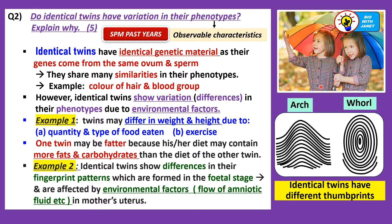They share many similarities in their phenotypes such as the colour of the hair, blood group, and overall appearance. However, they may show differences in their phenotypes due to environmental factors. So in this case, both genetic and environmental factors affect their characteristics.